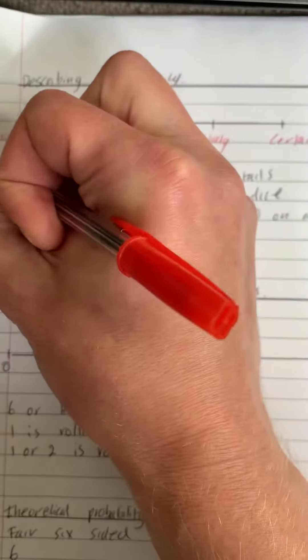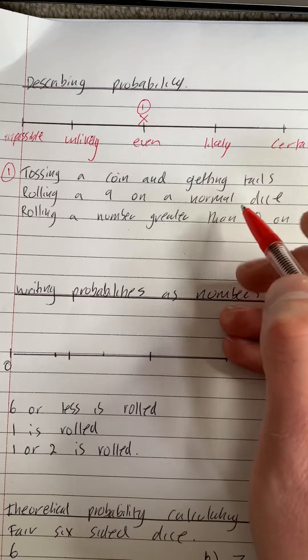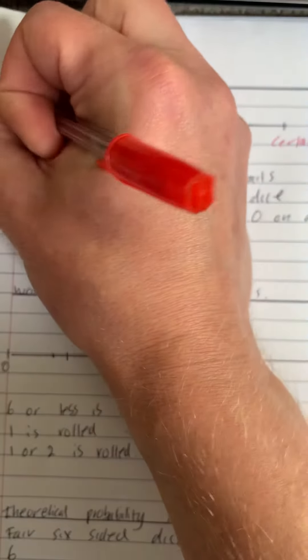It says rolling a nine on a normal dice. Well that's impossible, so we can put that one there.